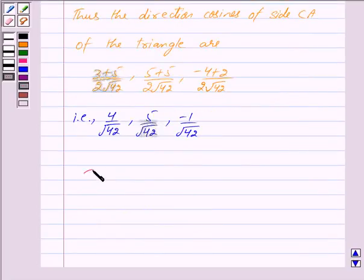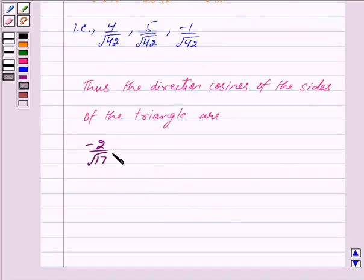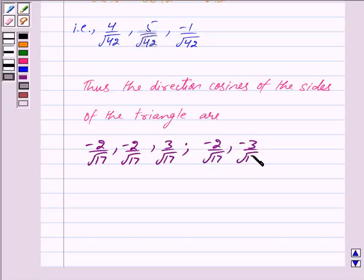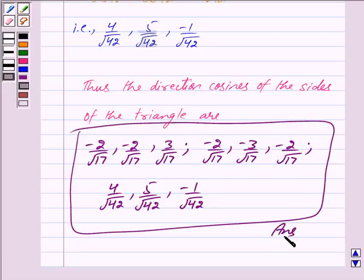Thus the direction cosines of the sides of the triangle are: -2 upon root 17, -2 upon root 17, 3 upon root 17; and -2 upon root 17, -3 upon root 17, -2 upon root 17; and 4 upon root 42, 5 upon root 42, -1 upon root 42. This is our answer. Hope you have understood the solution. Bye and thank you.